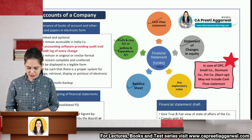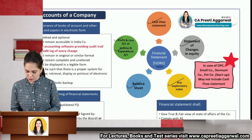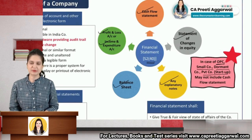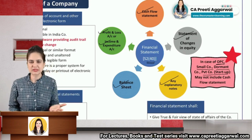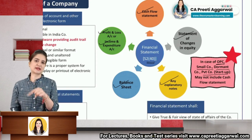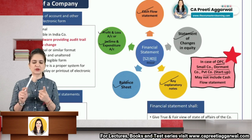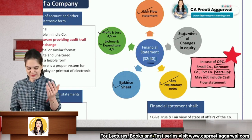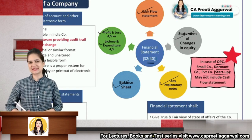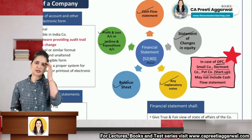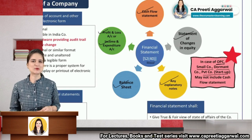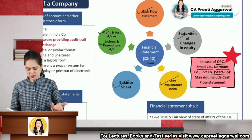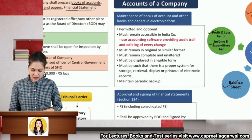Financial statements also include statement of changes in equity and any explanatory notes. However, if you are a one person company, small company, dormant company, or a private company that is a startup, you may not need to include a cash flow statement. This is a small privilege given to such companies. Otherwise, financial statements of all other companies will include profit and loss, income and expenditure, balance sheet, cash flow statement, notes to accounts, and statement of changes in equity. The exemption exists because cash flow statements are tedious, and these smaller companies may not have many transactions.